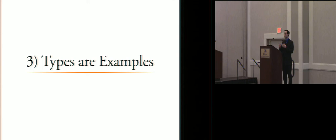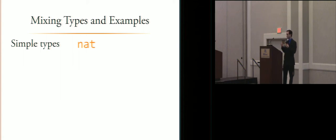So when we mix types and examples, we need richer types. For example, we have simple types. So we could write nat to describe all natural numbers. To say, for example, we can use specific values. And note that the times symbol here is just a product type.